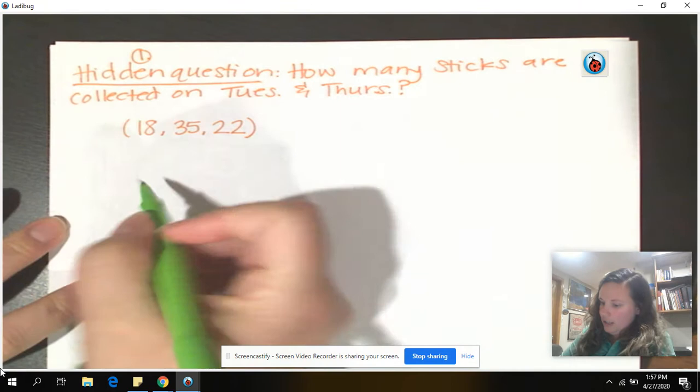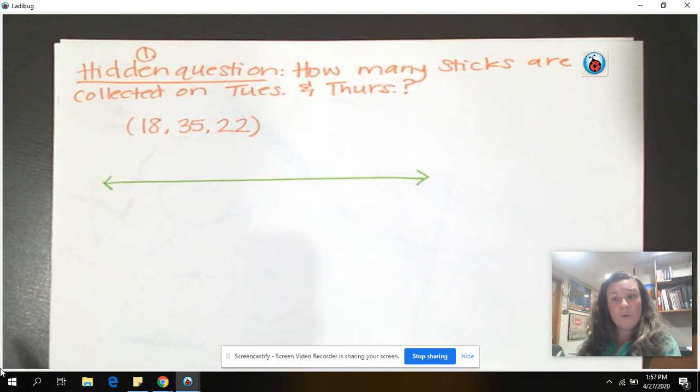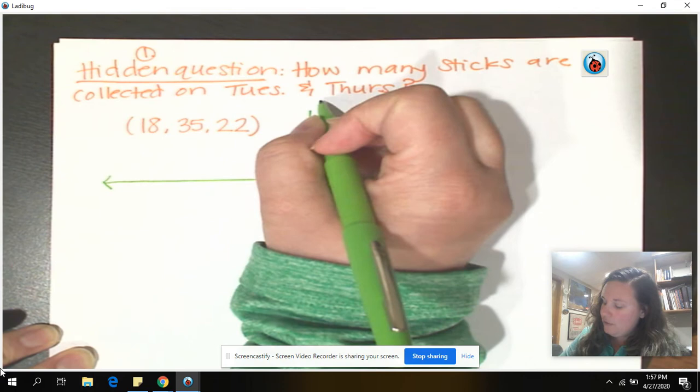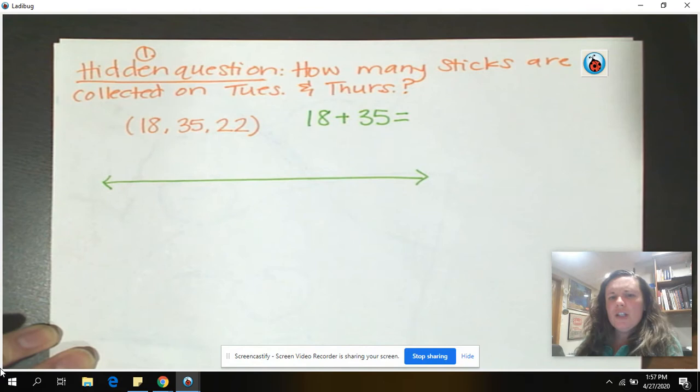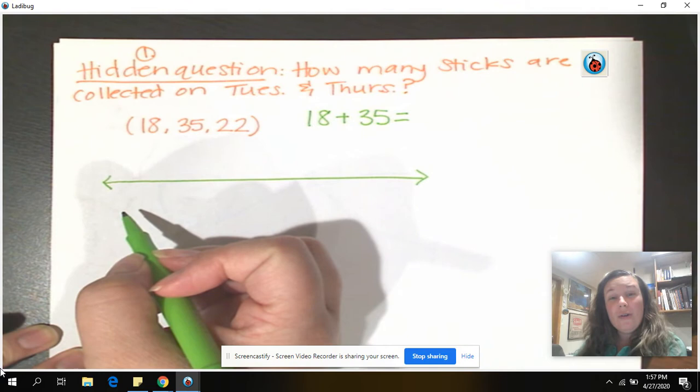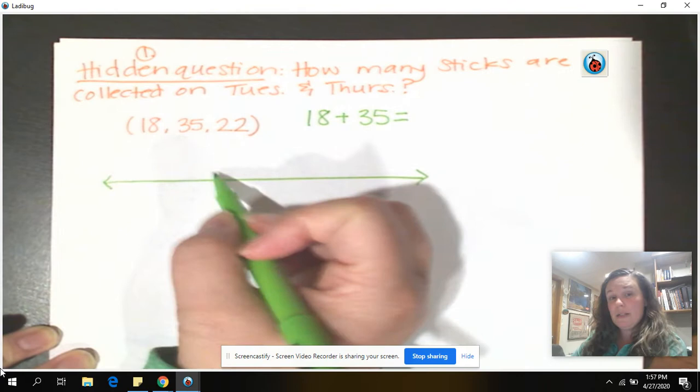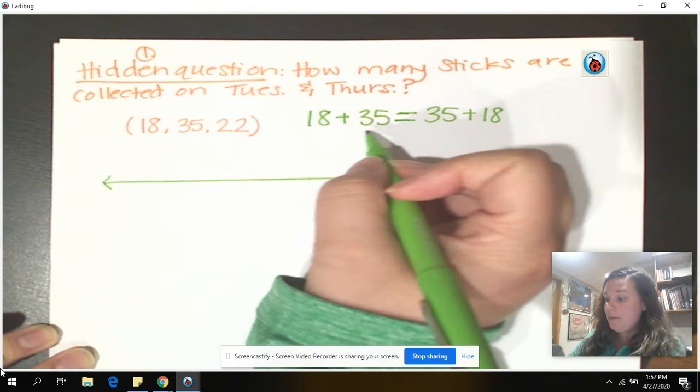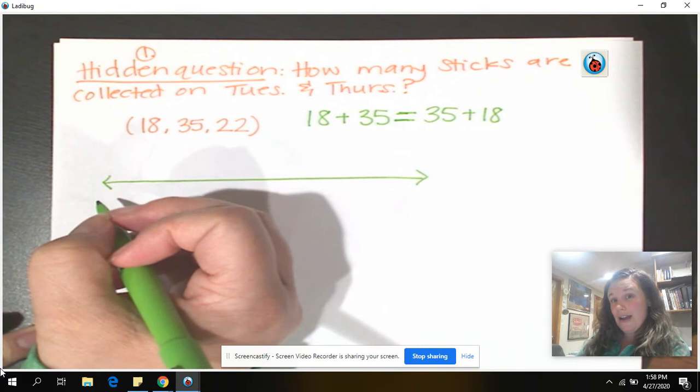Now remember, if we're adding, we're starting here at the beginning, and we're going to jump forward. So our first number is 18. We're adding 18 from Tuesday plus 35 from Thursday. So here's my question. Do I have to start with 18? I don't. I can start with 35. And if I start with 35, that means I don't have to jump as much on my number line, and I'm going to get the same answer if I do 18 plus 35 or 35 plus 18. Because guess what? They're the same. 18 plus 35 is the same as 35 plus 18. So I'm going to start with 35 because that's more efficient.